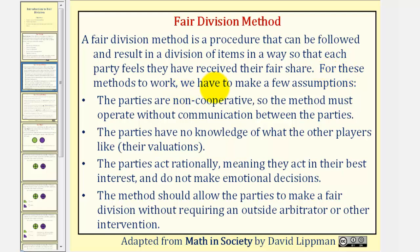For these methods to work, we do have to make a few assumptions. Number one, the parties are non-cooperative, so the method must operate without communication between the parties. Two, the parties have no knowledge of what the other players like, or do not know their valuations. Three, the parties act rationally, meaning they act in their best interest and do not make emotional decisions. And finally, the method should allow the parties to make a fair division without requiring an outside arbitrator or other intervention.